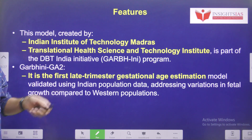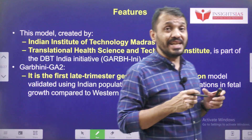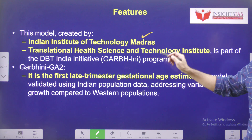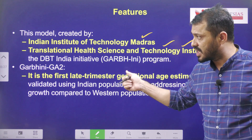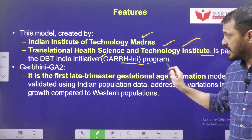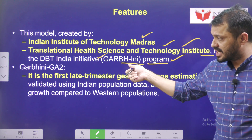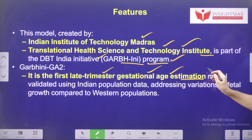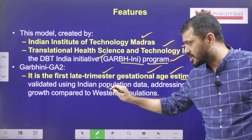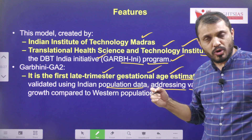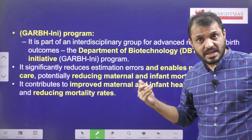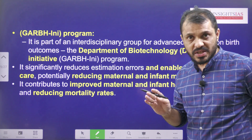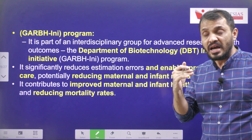This AI model was created by the Indian Institute of Technology Madras in collaboration with the Translational Health Science and Technology Institute. This institute is a part of the DBT India Initiative GARBINI program. This Garbini GA2 is the first last-trimester gestational age estimation model, and it is completely developed based on Indian population data. The existing models are based on European models developed based on foetus growth in European countries, and there is a significant difference between foetus growth in the Indian subcontinent and in European countries.